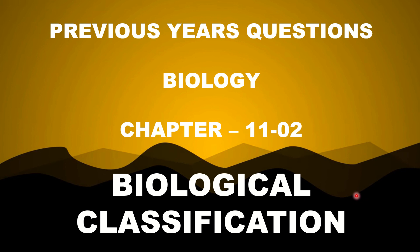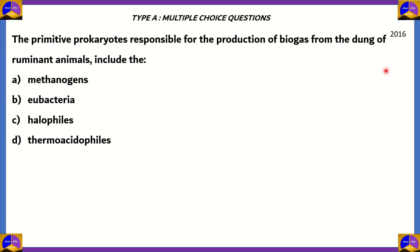Let's look at our first question, asked from 2016. The primitive prokaryotes responsible for the production of biogas from the dung of ruminant animals include: A) methanogens, B) eubacteria, C) halophiles, D) thermoacidophiles. Let's look at each of the options.